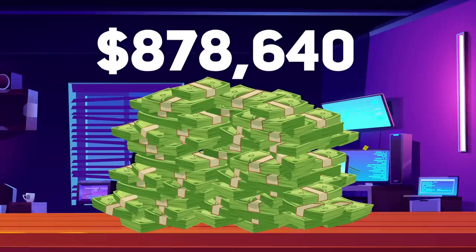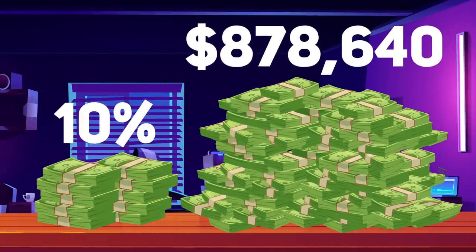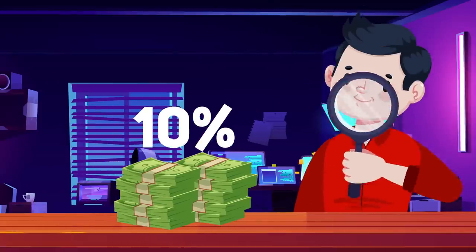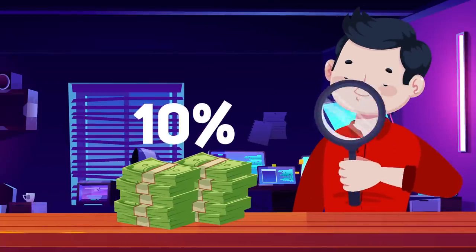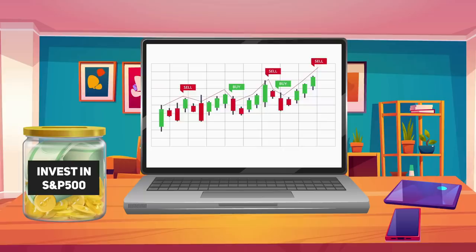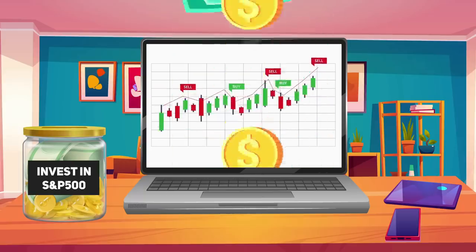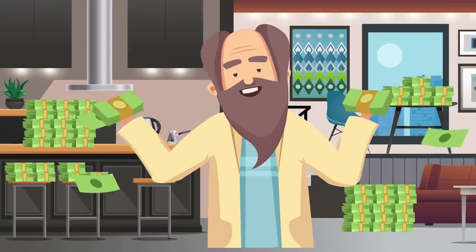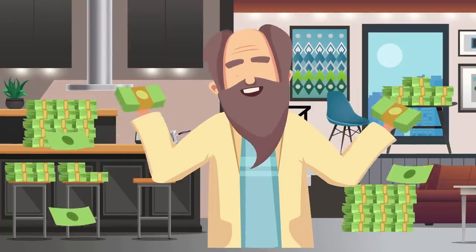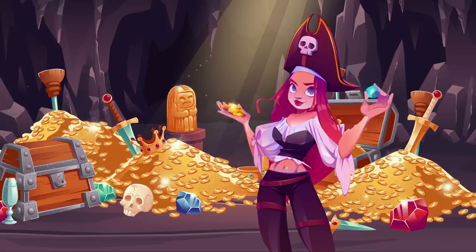10% out of $878,640 is $87,864, the amount we are looking for. This means if you manage to invest $878,000 for the rest of your life, you can spend $87,000 and your wealth will remain the same.